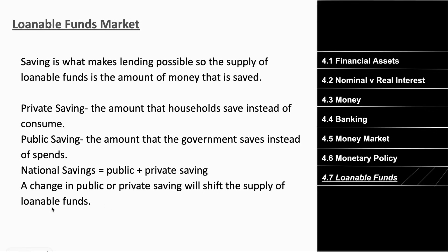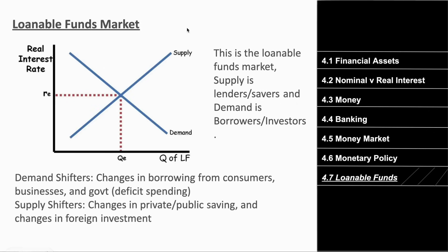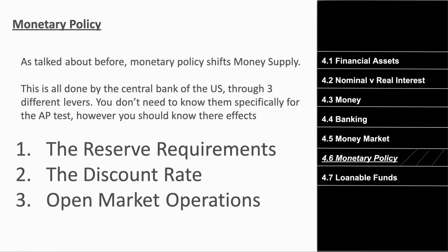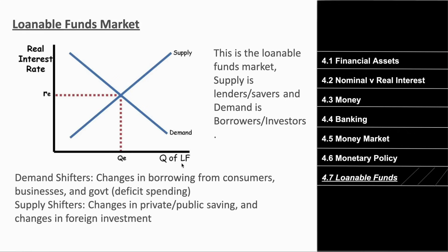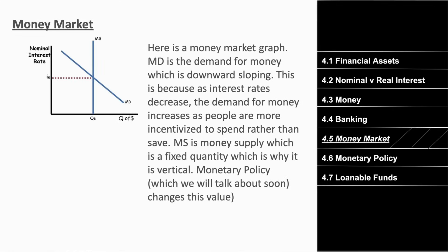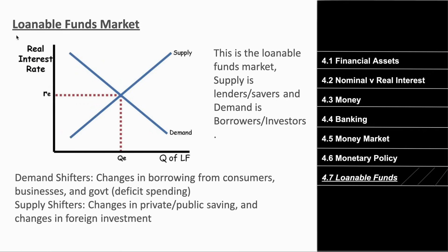The loanable funds market is another supply and demand graph. Supply comes from lenders and savers; demand comes from borrowers and investors. A key difference from the money market graph: the x-axis is quantity of loanable funds (not money), and the y-axis is the real interest rate — not the nominal interest rate. Make sure you notice that distinction.